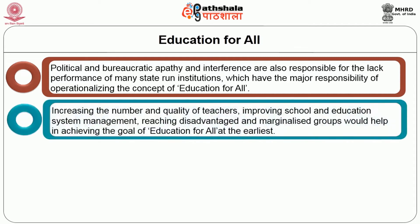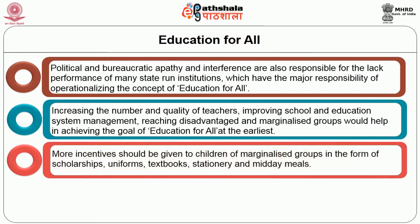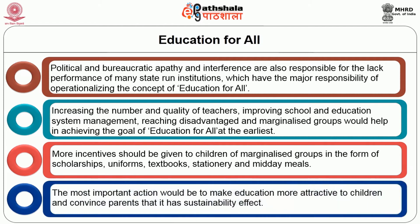Increasing the number and quality of teachers, improving schools and education systems, and reaching disadvantaged and marginalized groups would help in achieving the goal of education for all at the earliest. More incentives should be given to children of marginalized groups in the form of scholarships, uniforms, textbooks, stationery and mid-day meals. The most important action would be to make education more attractive to children and convince parents that it has a sustainability effect.